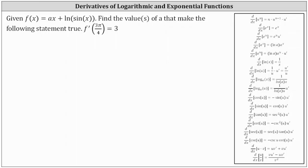Let's begin by determining f prime of x, the derivative function, which is equal to the derivative of ax with respect to x, which is a. Then plus the derivative of natural log sine x with respect to x. We notice the inner function, which we often refer to as u, is sine x, and the derivative of natural log u with respect to x is one divided by u times u prime. Therefore the derivative of natural log sine x equals one divided by sine x times the derivative of sine x, which is cosine x.